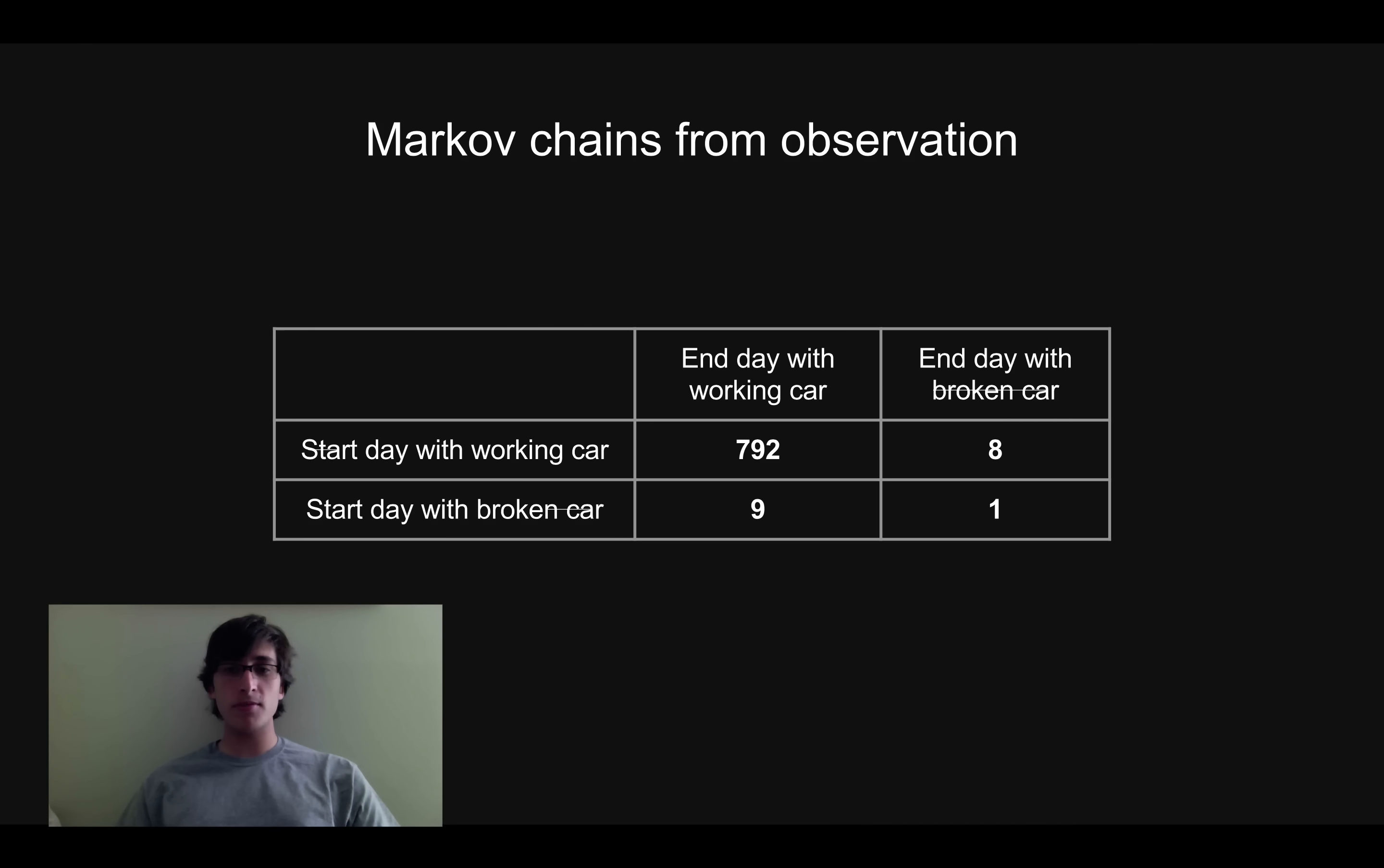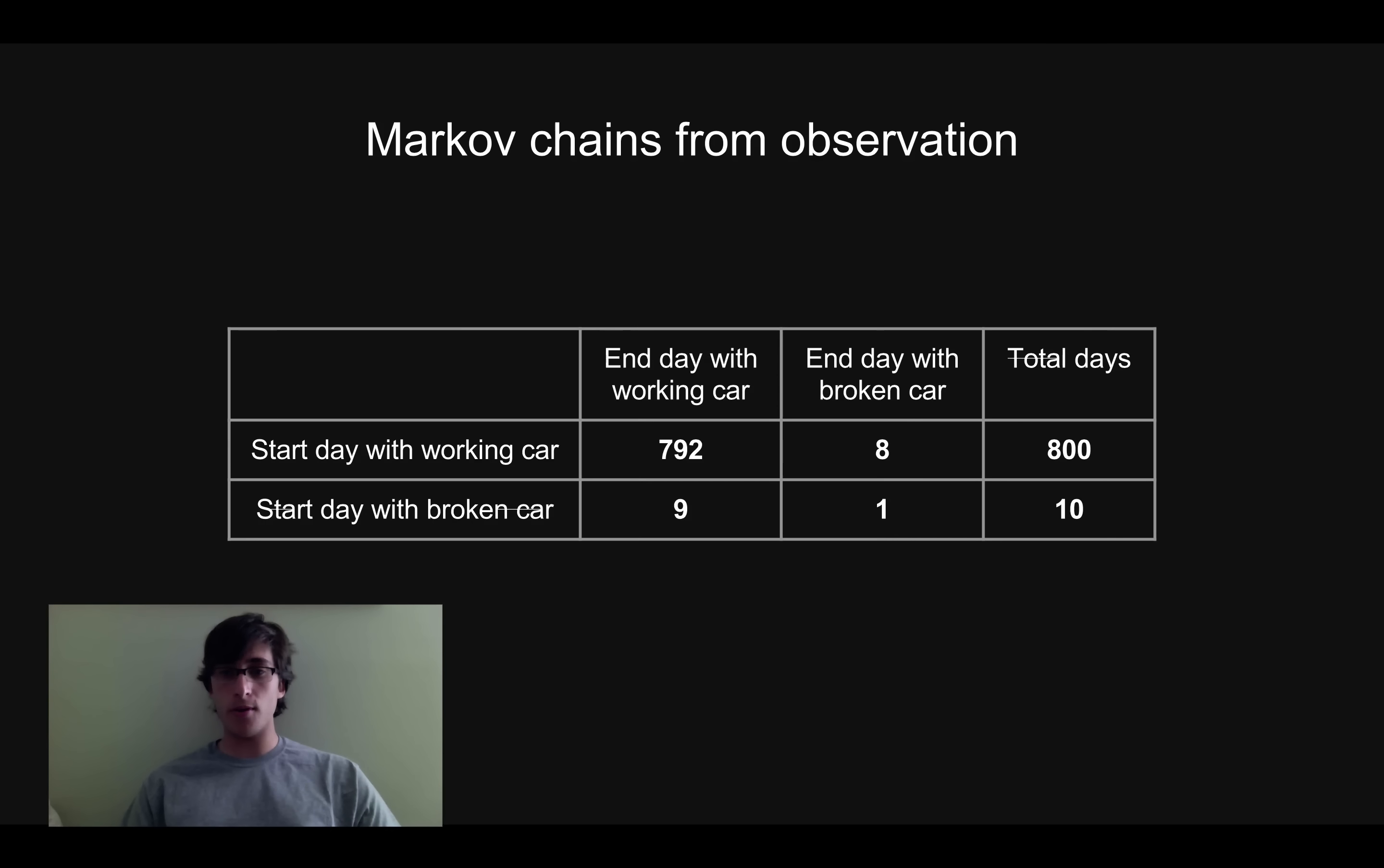So to turn this into an actual formal procedure, I'm just going to add another column to this table, which is the total number, the total sum of that entire row. So for the first row, days starting with my car working, you can see that there's a total of 800 days where I started my day and my car was working and there were a total of 10 days when I started my day and my car wasn't working. And what this allows me to do is in the first row, I can just divide all those things by 800 and in the second row, I can divide those things by 10. And so now in the first row, I can see that if I wake up with my car working 792 out of 800 times, I will go to bed with my car working as well. So really this just turns our raw counts, our raw number of days this happened.